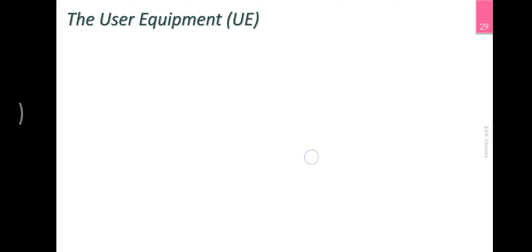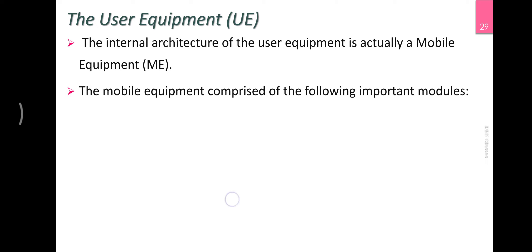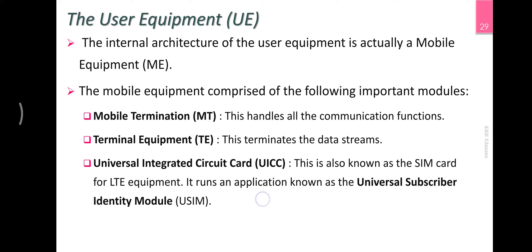There is an expanded version. User equipment is one node — we have a mobile phone. That is one node with three sections. There is a mobile termination, which handles all communication functions. Terminal equipment is one node.